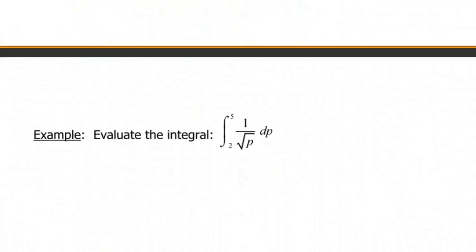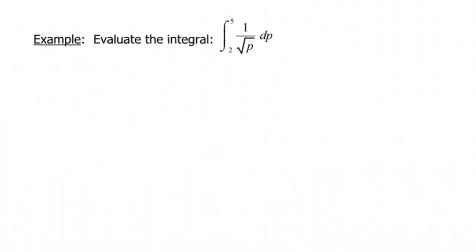Next example, again, evaluate the integral. This one looks a little bit uglier, though. So we've got the integral from 2 to 5 of 1 over the square root of p dp. So again, this dp here tells me that I am doing my integral with respect to p.